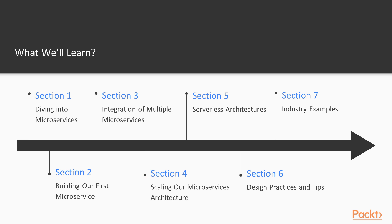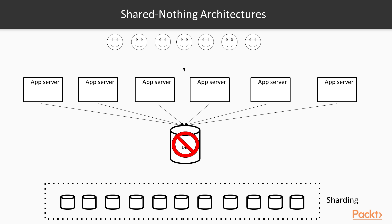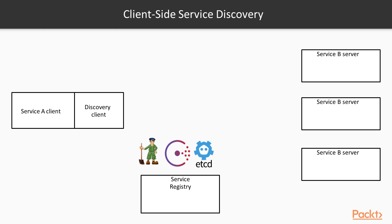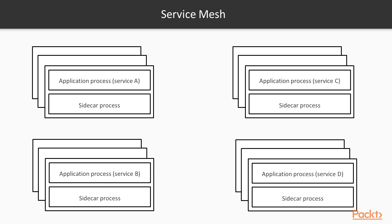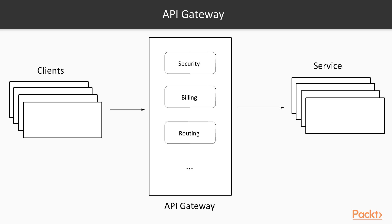We'll give some best practices and demonstrate how we can practically implement monitoring for our second service. In the fourth section, we will discuss the various approaches we can use to scale our systems and the characteristics of each one. We'll also demonstrate how we could scale our second microservice if needed. We'll explain the concept of service discovery, why it's very important in microservices architecture, and how we can implement it. We'll conclude the section by introducing the patterns of the service mesh and the API gateway, comparing the benefits of each one.